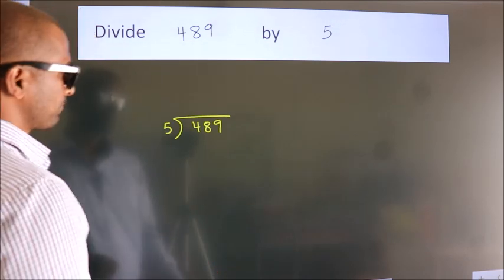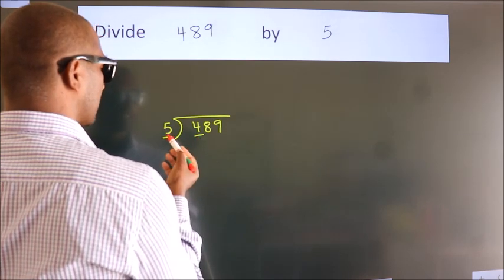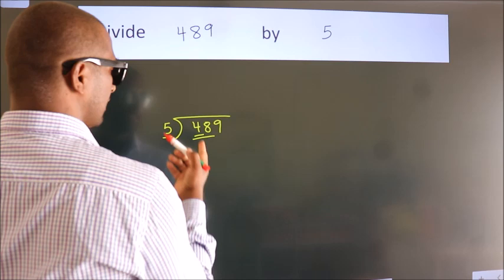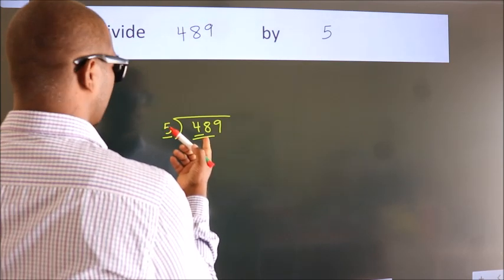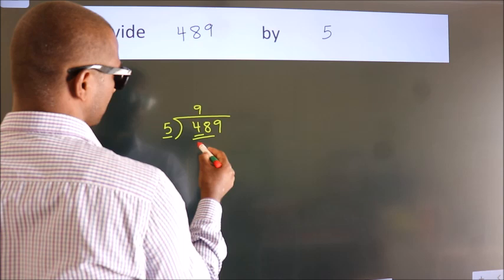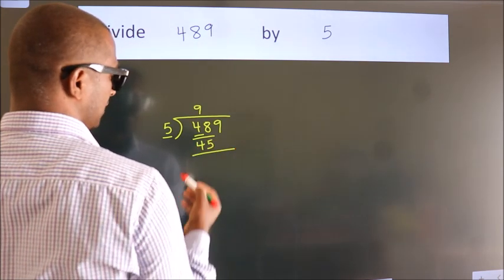Next, here we have 4 and here 5. 4 is smaller than 5, so we should take two numbers: 48. A number close to 48 in the 5 table is 5 nines, 45. Now we should subtract. We get 3.